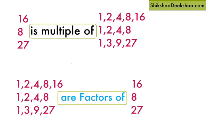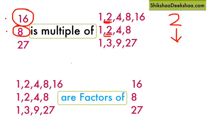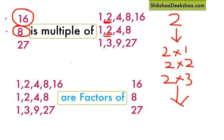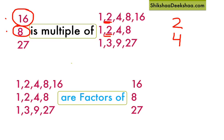You can also see that 16 is a multiple of 2, and 8 is also a multiple of 2. Multiples of 2 can be obtained by multiplying 2 by any number — 2×1, 2×2, 2×3, and so on. So all numbers in the 2's table are multiples of 2: 2, 4, 6, 8, 10, 12, and so on. We can extend this table endlessly, so a number has an unlimited number of multiples.